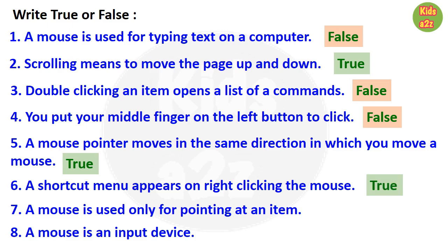Number 7: a mouse is used only for pointing an item — false. Number 8: a mouse is an input device — that is true. Thanks for watching, Kids A to Z.